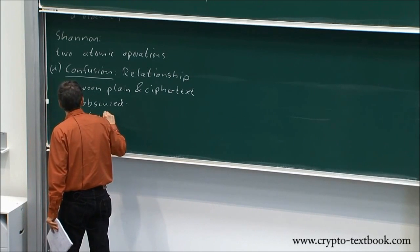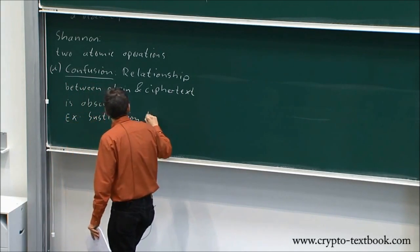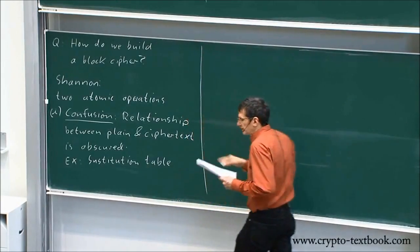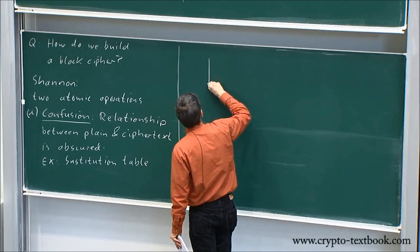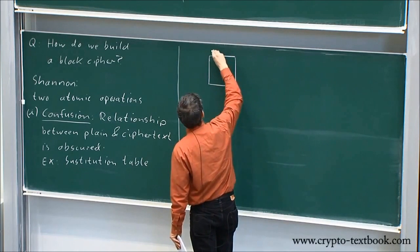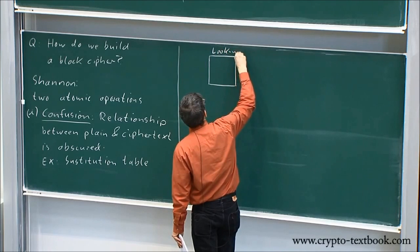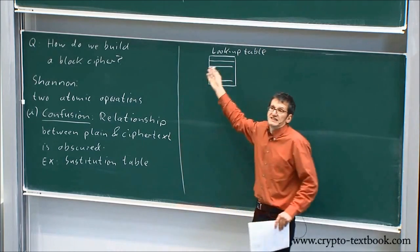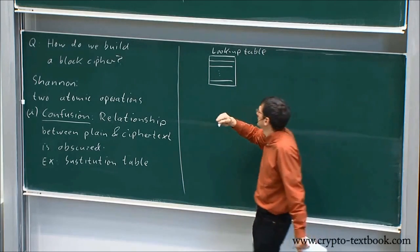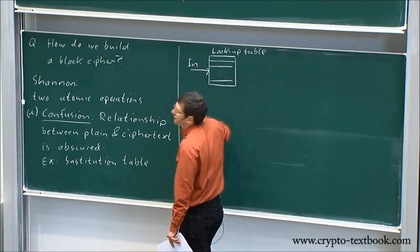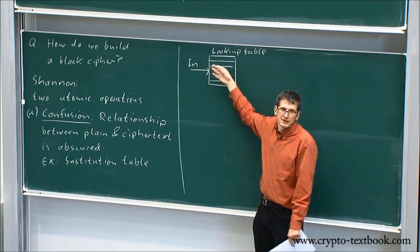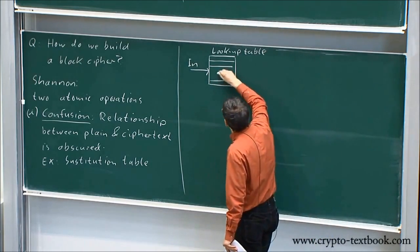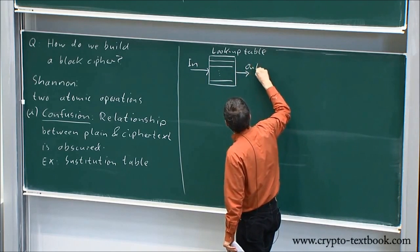An example is a substitution table. What do I mean by that? Typically, you have some kind of internal signal. You have a lookup table with entries - binary numbers, zeros and ones. What happens is you have some input, and every input picks a certain address, a certain row, and then you output what you see there. That's a lookup table.